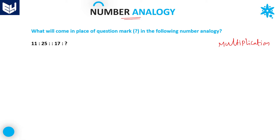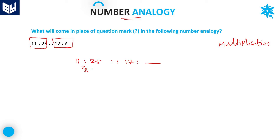What are the logics related to multiplications? How do the logics work? If you see the numbers here: 11 and 25 are given. After that, 17 is given in the second group, with a question mark. We have to find the relation from the first group of the series, and the same logic is applied for the second group. The logic it is following is 11 into 2, which is 22. And it is given as 25, meaning 11 into 2 plus 3. 11 into 2 is 22, plus 3, which is equal to 25.